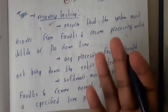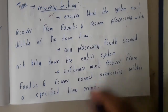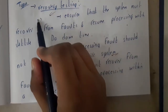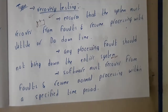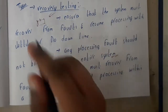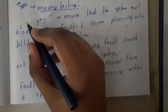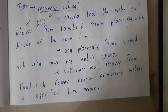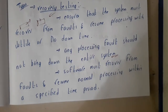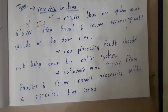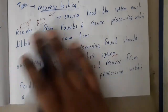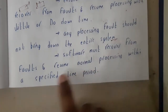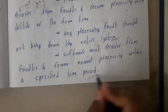You should ensure the recovery requirement for any kind of issue. Any processing fault should not bring down the entire system. For example, if posting is not working on Facebook, that is a small issue — other features still work fine. But if the whole Facebook goes down, that is a big issue. So a fault should not affect other components or bring down the entire system. The software must recover from faults and resume normally within a specific, limited period of time.